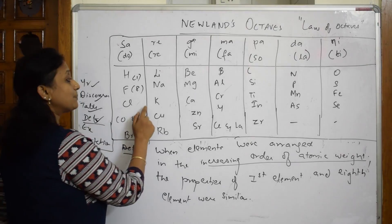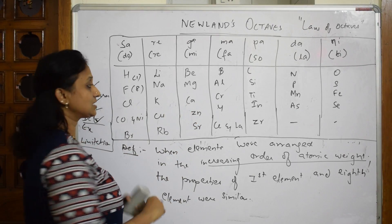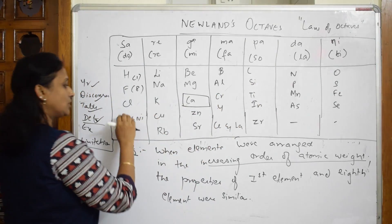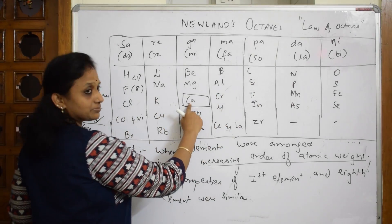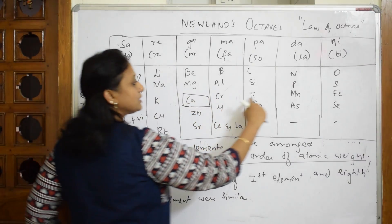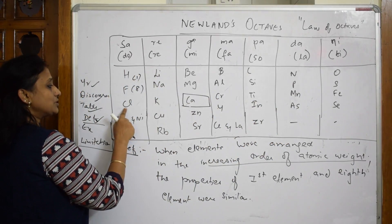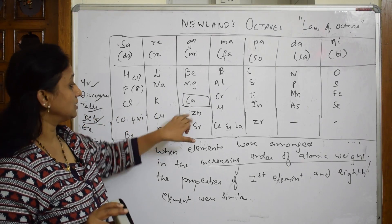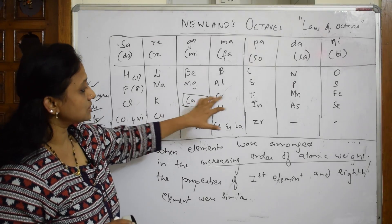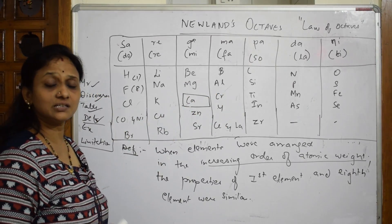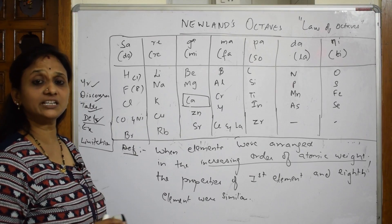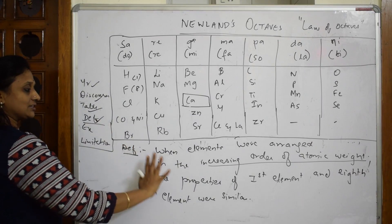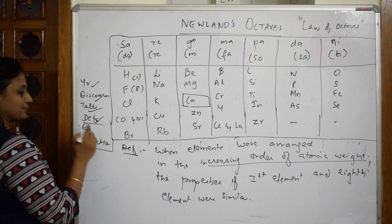However, this concept was applicable only till calcium — atomic number 20. After calcium, when he started arranging further elements, the properties of the first and eighth elements became dissimilar. So his Law of Octaves was valid only up to calcium.